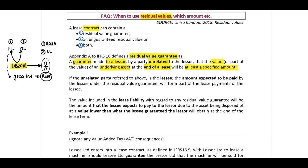When we look at our lessee, in our lessee's records, we will have to recognize our right of use of our asset and our lease liability. To be able to calculate the lease liability, which is the present value of your payments, we need to determine our interest rate implicit of the lease, and we need to determine our lease liability - the present value.